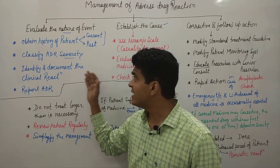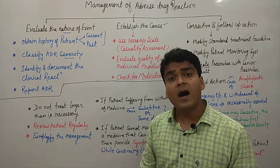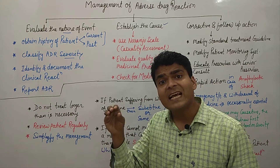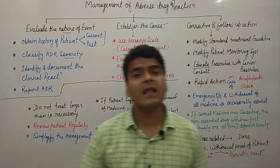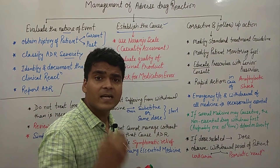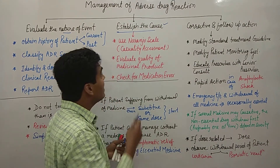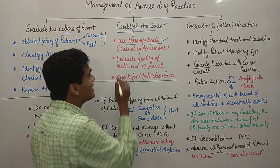The next step is to establish the cause — to find out which drug is responsible. To do the causality assessment, there are several algorithm methods. One such method is the Naranjo scale. We have already discussed the Naranjo scale and how causality assessment is done through it, so the Naranjo scale will be used here.